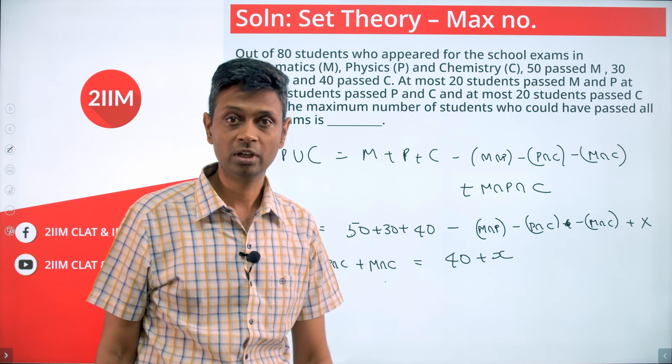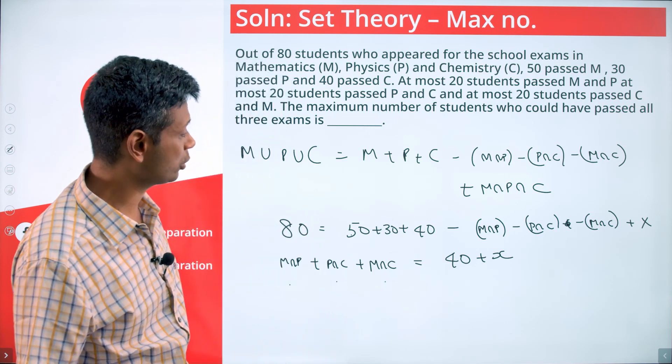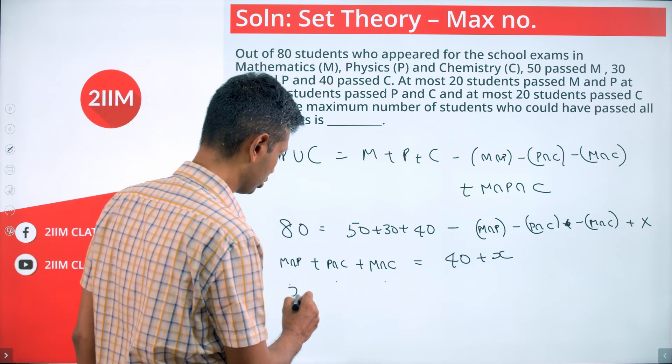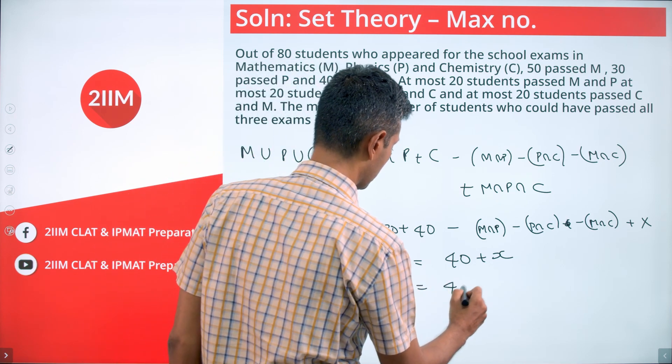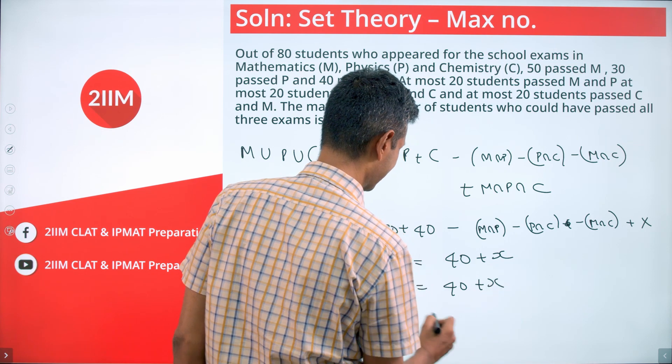These three should be as high as possible. Here, at most 20. Best case scenario, put this as 20, 20, 20. This is 40 plus x. X maximum is 20.